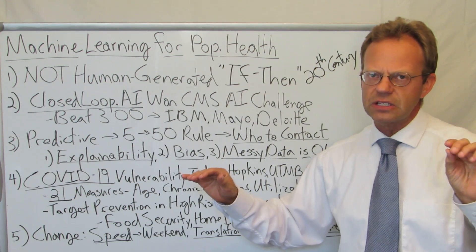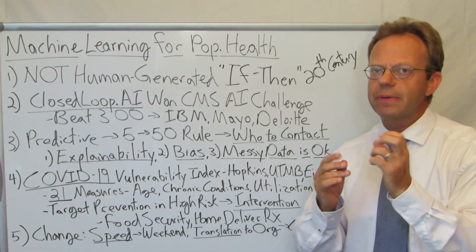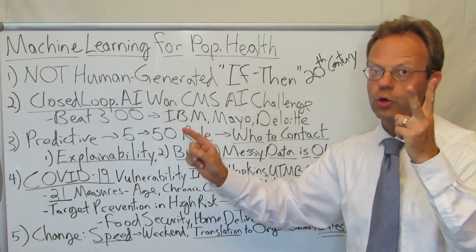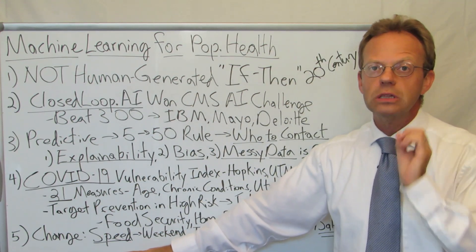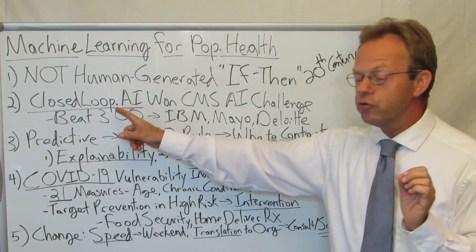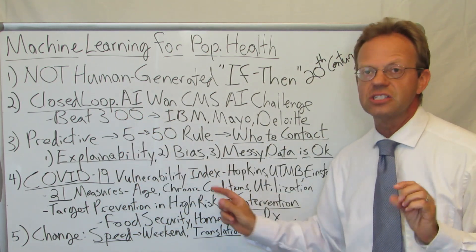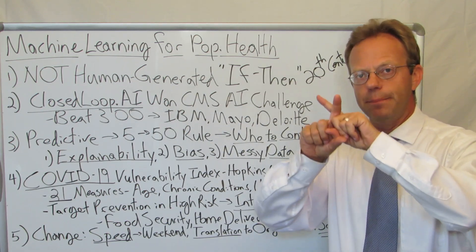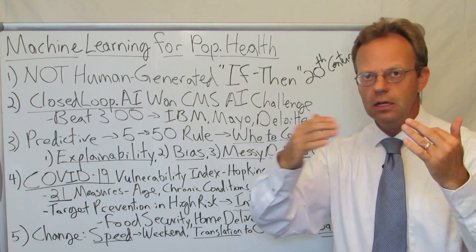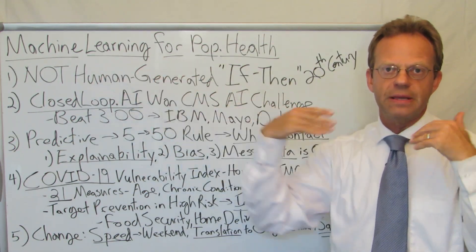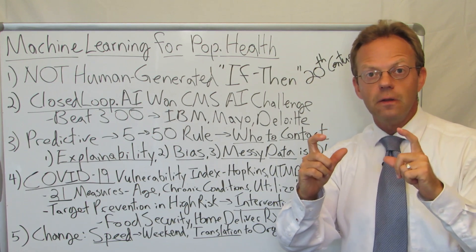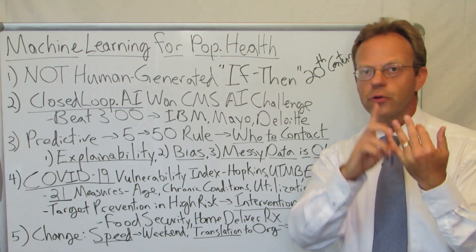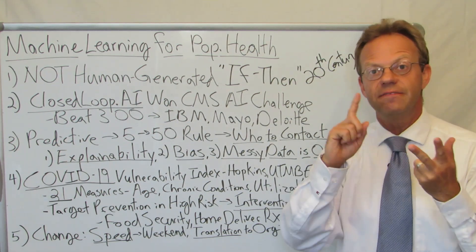In one of the videos I'll link to in the show notes, they also talk about how the COVID-19 pandemic caused very specific changes in the application of machine learning to population health. One is speed. Closed Loop AI created the COVID-19 vulnerability index over a weekend. They did it in a weekend. They already had a platform in place. The point is that if you have the framework in place, these projects don't take five weeks or five months — they can take five days.